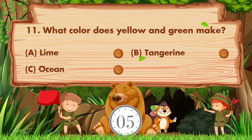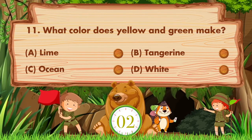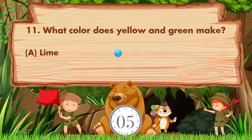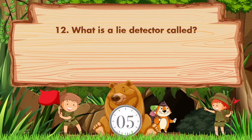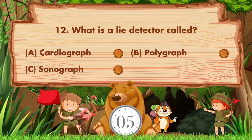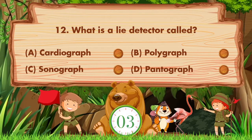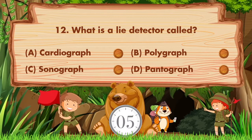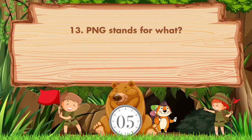What color do yellow and green make? Option A: Lime, B: Tangerine, C: Ocean, D: White. Answer is option A, Lime. What is a lie detector called? Option A: Cardiograph, B: Polygraph, C: Sonograph, D: Pantograph. Sorry, we don't know the answer — if you know the answer, then like the video.